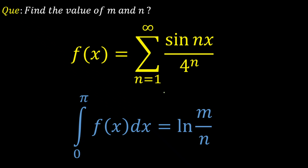Hello everyone, so today we're going to look at a classic problem from integration. The problem is: if f of x is given as the summation of sin(nx) upon 4 raised to the power of n, where the summation varies from n equals 1 to infinity, and the integration from 0 to pi of f(x) dx is given as log of m by n, we have to determine the value of m and n.